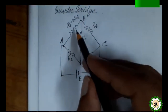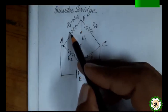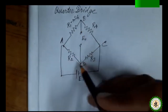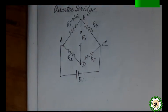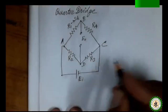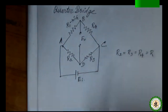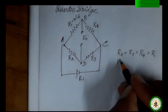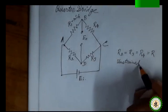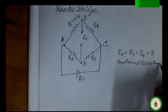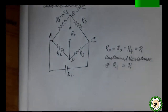Since the other arms use standard resistances, we consider all resistances are of equal value: R2 = R3 = R4 = R. The unstrained resistance of R1 is also R. The input voltage is EI and output voltage is EO across the diagonal points of the bridge.